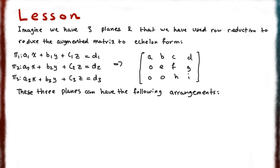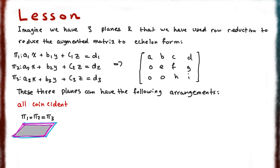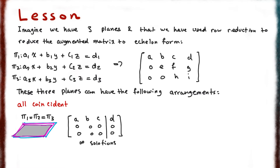The first situation is when all of the planes are coincident, meaning they all lie on top of each other. When this happens, the augmented matrix will have its first row, but the second and third rows will all equal zero. That means we'll have an infinite number of solutions. This happens because all planes share the same exact normal, causing the second and third rows to cancel out to zero.